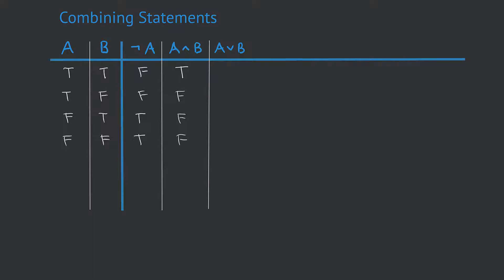Now let's look at A or B — the disjunction operator. A or B is true if and only if at least one of A and B is true. In other words, A or B is false if and only if both A and B are false. This is only the case in the last line, so the value for A or B in that last line is false, whereas it is true for all the three lines above it.